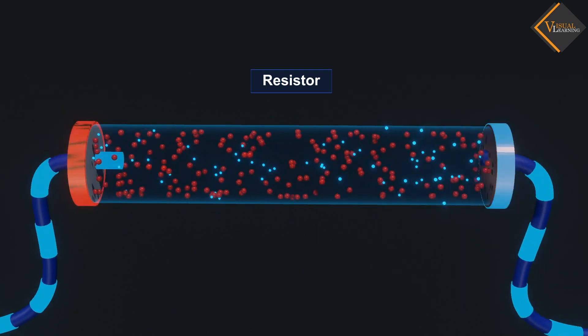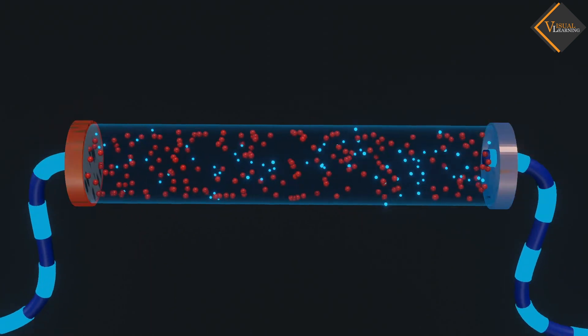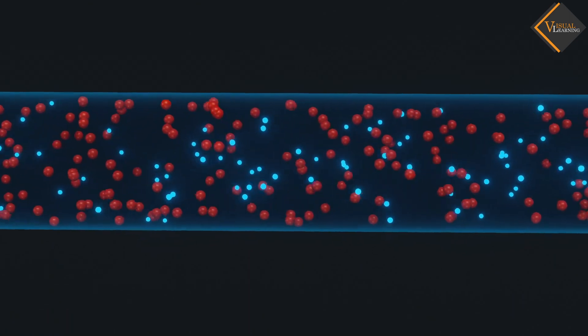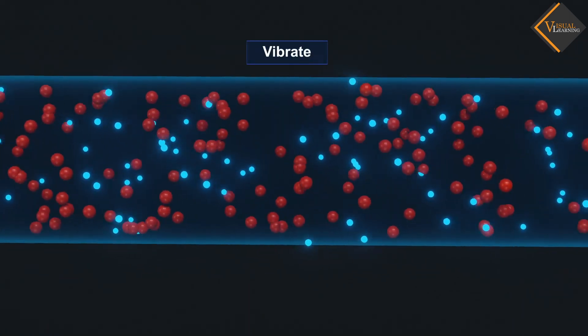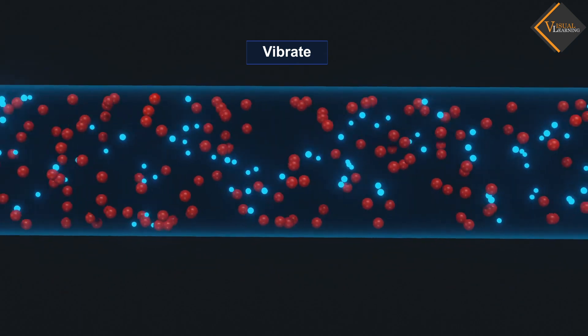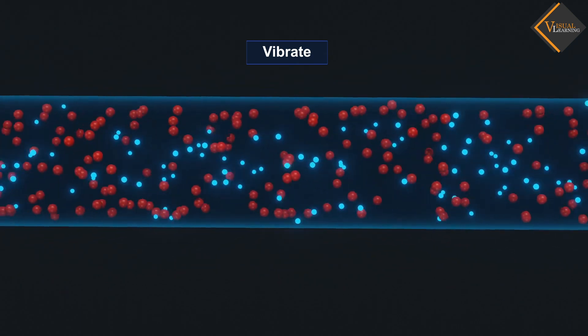When electrons flow within the resistor, they collide with the atoms of the resistor. And because of that, atoms start to vibrate. More the collision, more atoms vibrate about their mean position.